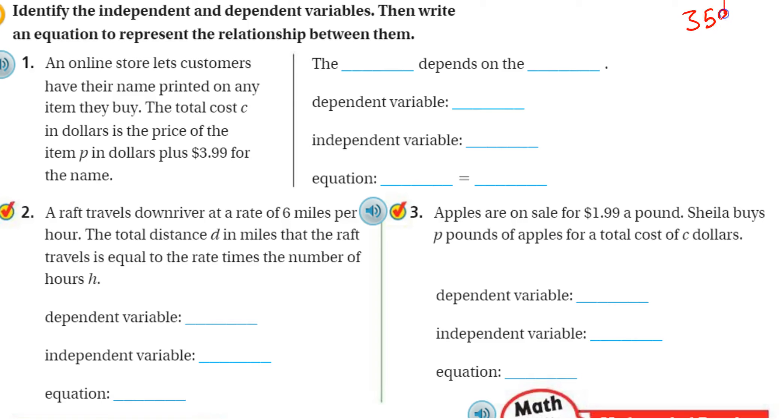Alright, now I'm on page 359 of the GoMath textbook. Let's follow along. It says identify the independent and dependent variables, then write an equation to represent the relationship between them.